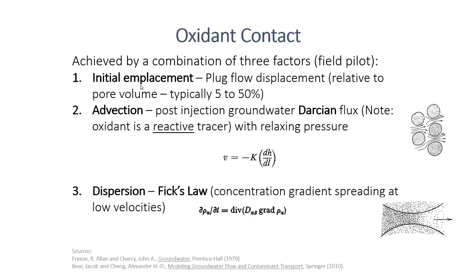As you're injecting or emplacing material into the ground, you have three major processes affecting the distribution of that material. You have the initial emplacement — plug flow displacement during injection. You have post-placement advection, or groundwater flow components, where the injectate moves with Darcy flux with relaxing pressure — in other words, it moves with the groundwater flow at a site. And you have dispersion, Fick's law, where distribution occurs by concentration gradient spreading, most typically important at low velocity sites and limited permeability sites, though dispersion also plays a role across the site.